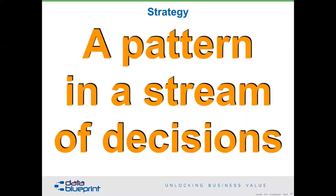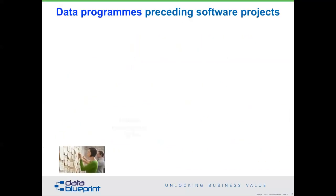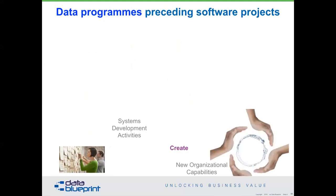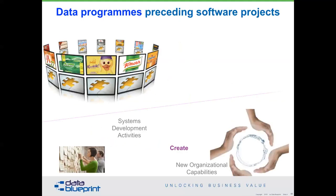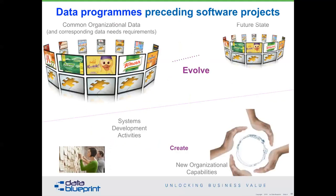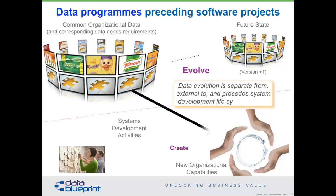Strategy is a pattern in a stream of decisions — everybody has to understand this from top to bottom. We don't understand that data programs need to precede software products. Data evolves at a different cadence, rhythm, and pace than applications. Application development processes are very good at creation activities. Agile is one of the more effective approaches for development work, but when asked how data and Agile interact, the answer is: they absolutely do not. Data work takes months, quarters, years, or decades; Agile sprints run two weeks. They have to be separated and made sequential. Data is not a project.